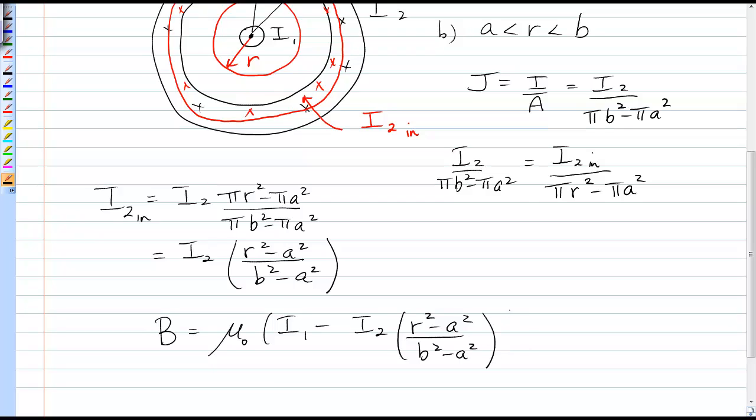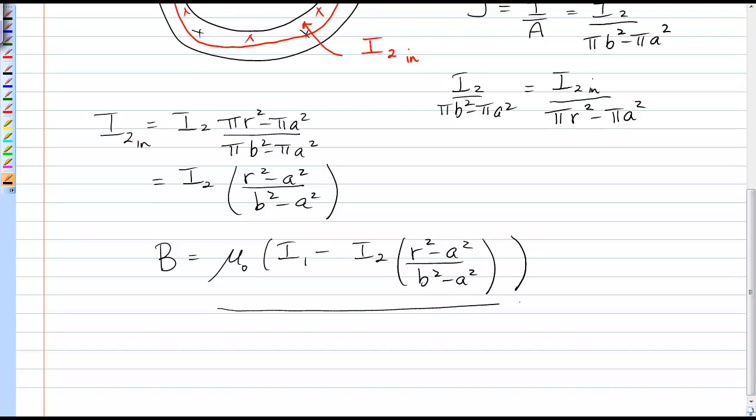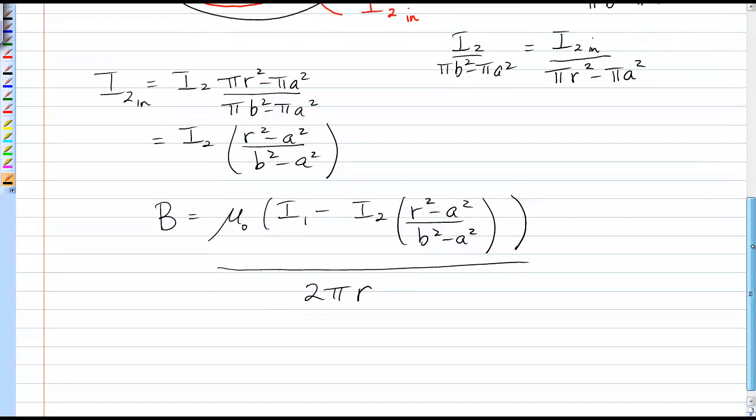So that's I_in on top, and then I still have over 2 pi r. And you can just leave the function like that. So that's the magnetic field in that outer conductor.